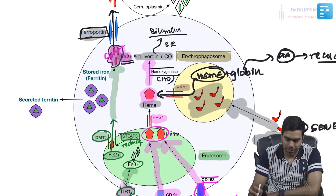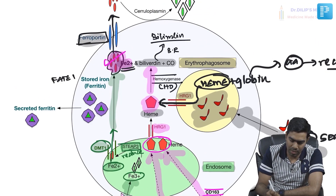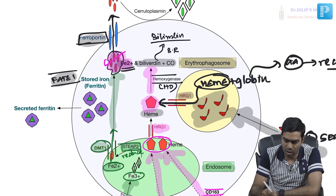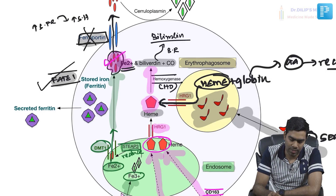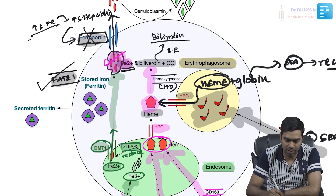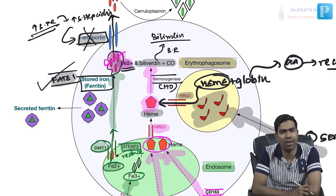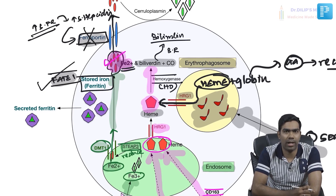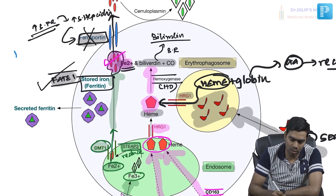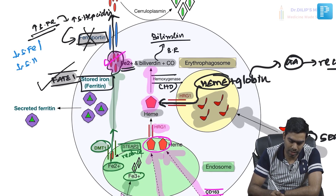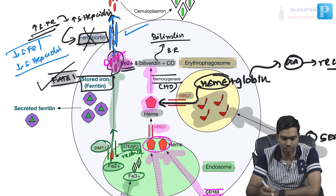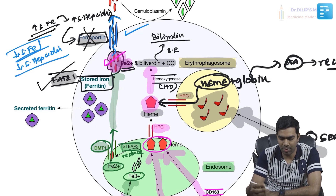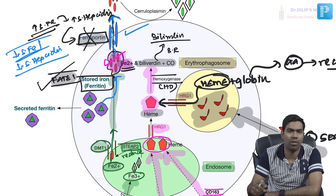There are two fates. Fate number one: if ferroportin is blocked — which happens when circulating iron is high, causing high hepcidin release, which blocks ferroportin — then iron must be stored as ferritin. This makes sense: high circulating iron means it is time for storage, not for releasing more iron. Conversely, when serum iron is low, hepcidin is low, ferroportin is active, and iron is released into circulation. Ferritin stores can also be mobilized to Fe2+ and pushed into the circulating pool during low-iron states.